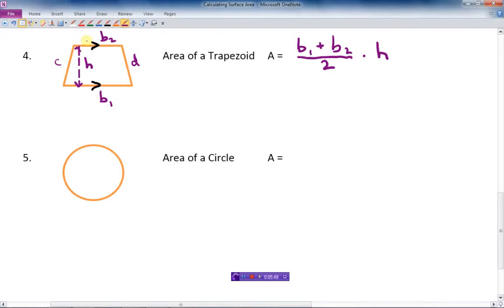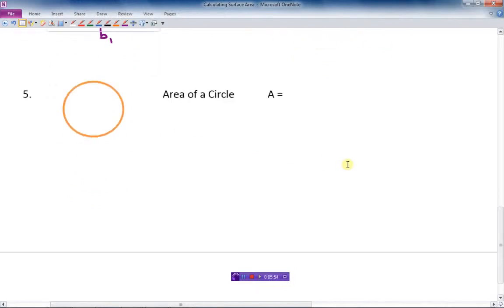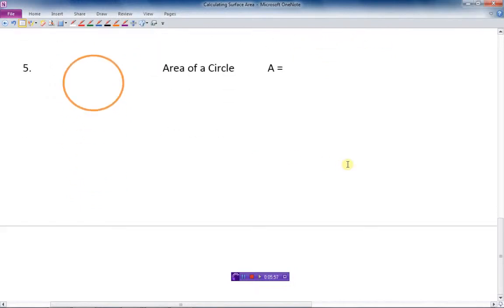Lastly, we have a shape that has no straight sides. We have a circle. And the area of a circle, if you remember this one, is pi r squared. And so pi is a number that doesn't have an end to it. It's 3.14159, something like that. It goes on and on and on. So basically, if you use your calculator, you can use the pi button. Or if you don't have the pi button, just use 3.14. Usually, for this course, it would be good enough.